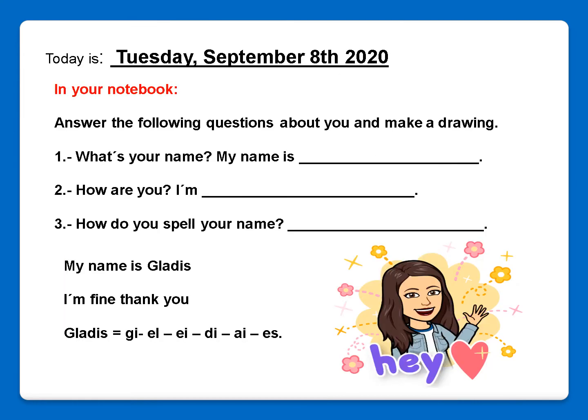In your notebook, you have to answer the following questions about you, and you have to make a drawing. Today is Tuesday, September 8, 2020. Number one: What's your name? My name is... and here you have to write your name.